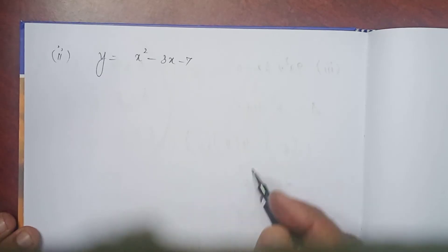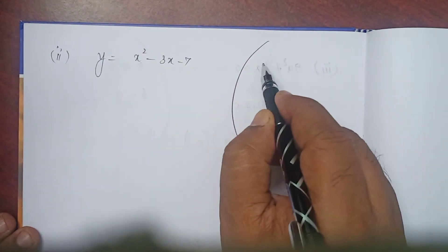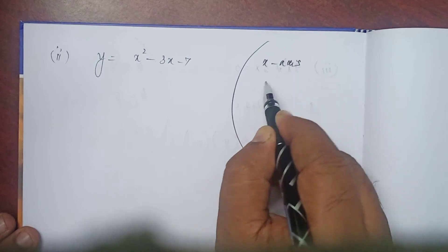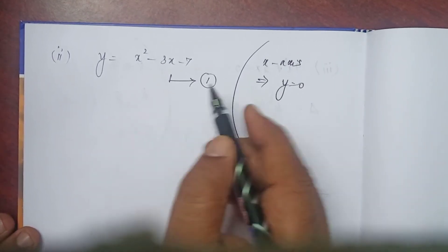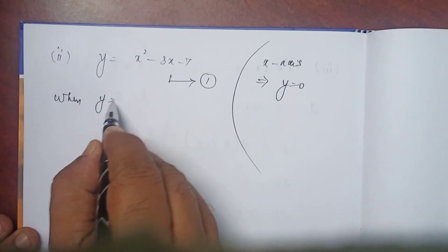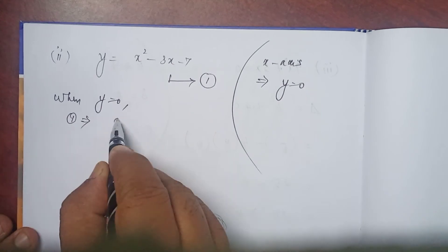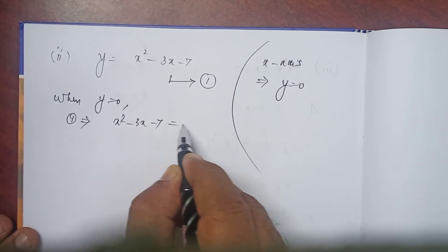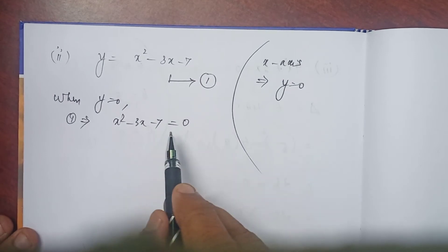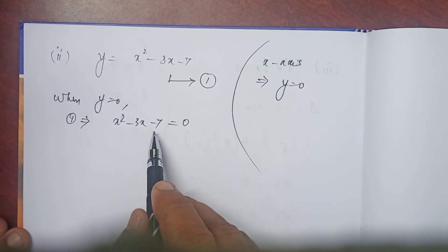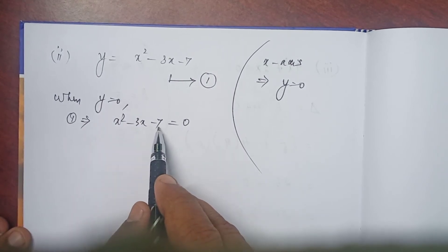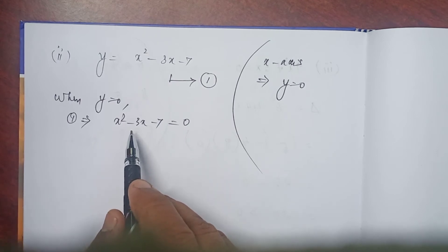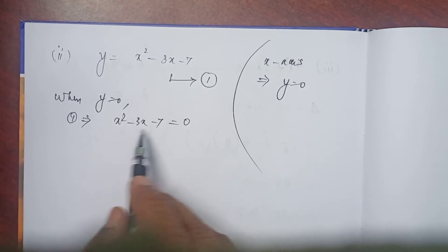Subdivision number 2. If the curve intersects the x-axis, the equation of the x-axis is y = 0. When y = 0, equation 1 implies x² − 3x − 7 = 0. We can factorize if possible: coefficient of x² is 1; 1 × (−7) = −7; product −7, sum −3 — no two numbers work. It cannot be factorized.